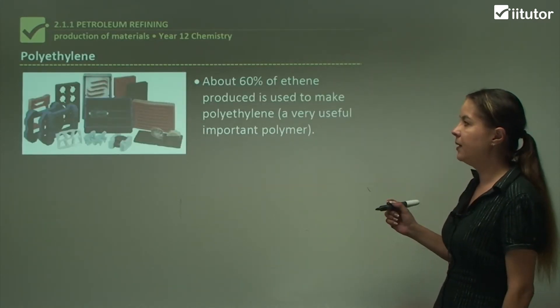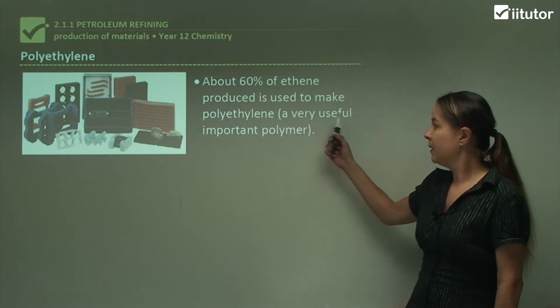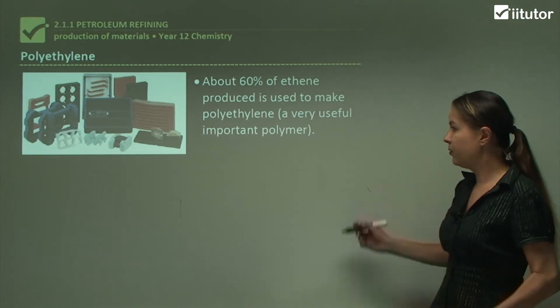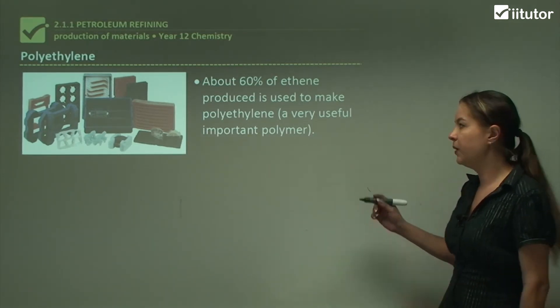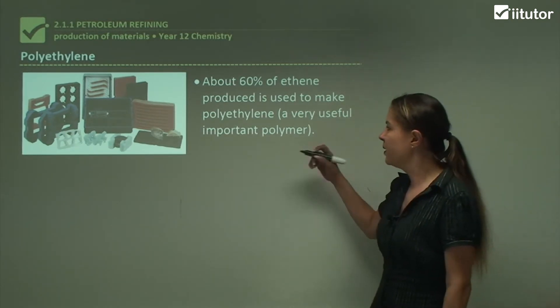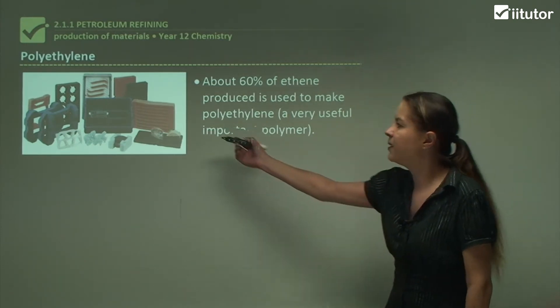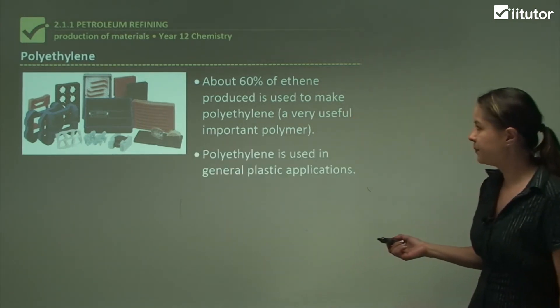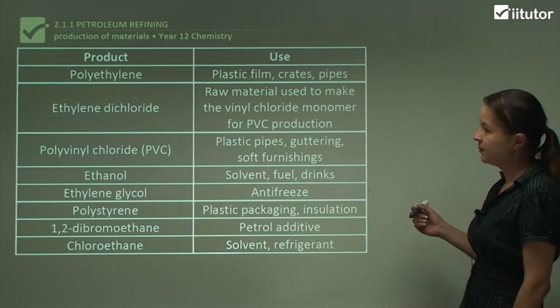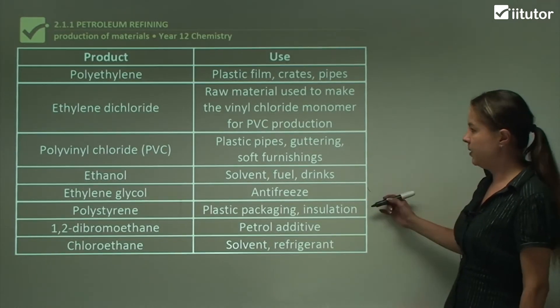Looking at polyethylene, about 60% of ethane is used to make polyethylene, which is a very important and useful polymer. I can tell you that I've got plastics all around me, we all do, and I couldn't actually imagine life without plastics because we use so many of them. Packaging, pens for example, all sorts of things, like in this picture here. It's used in general plastic applications.